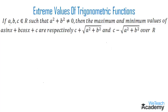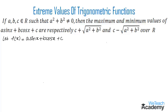The theorem states: if a, b, c belong to R such that a squared plus b squared is not equal to 0, then the maximum and minimum values of a·sin(x) plus b·cos(x) plus c are respectively c plus square root of (a squared plus b squared) and c minus square root of (a squared plus b squared) over R. So let us define f(x) equals a·sin(x) plus b·cos(x) plus c for all x belonging to R.